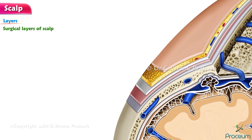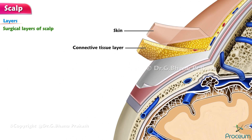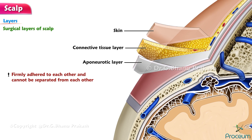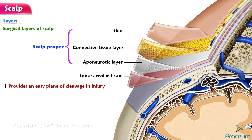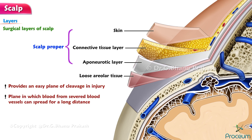Surgical Layers of the Scalp: The first three layers — the skin, connective tissue layer, and aponeurotic layer — are firmly adhered to each other and cannot be separated. These layers are termed surgical layers of the scalp and form the scalp proper. The layer of loose areolar tissue beneath the aponeurotic layer accounts for the free mobility of the scalp proper on the underlying bone, and provides an easy plane of cleavage on injury.